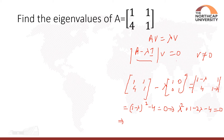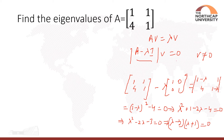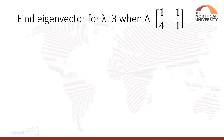Factoring λ² − 2λ − 3 = 0 gives (λ − 3)(λ + 1) = 0. So we get two eigenvalues: λ = 3 and λ = −1.